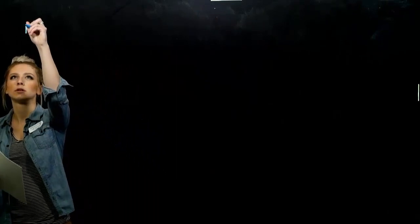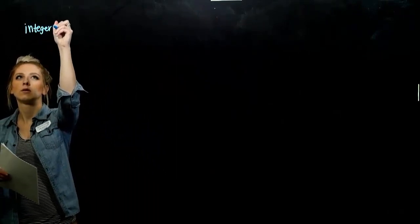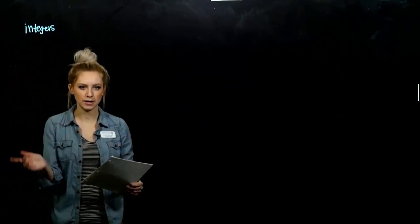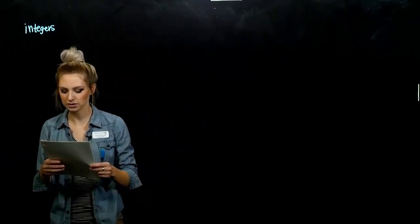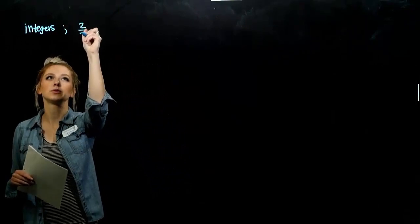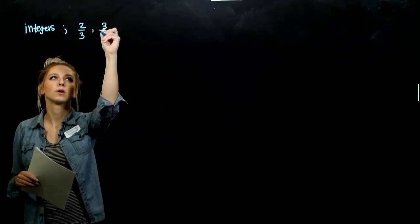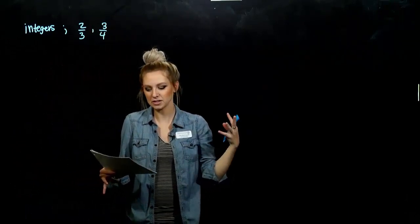We're going to move from polynomials into rational expressions, simplifying and multiplying them. So what is a rational number? Rational numbers are quotients, or fractions — fancy word for fractions — of integers. And again, what are integers? Whole numbers: positive, negative, and zero. Some examples of rational numbers would be like two-thirds or three-fourths. Fractions. Fancy word for fractions.